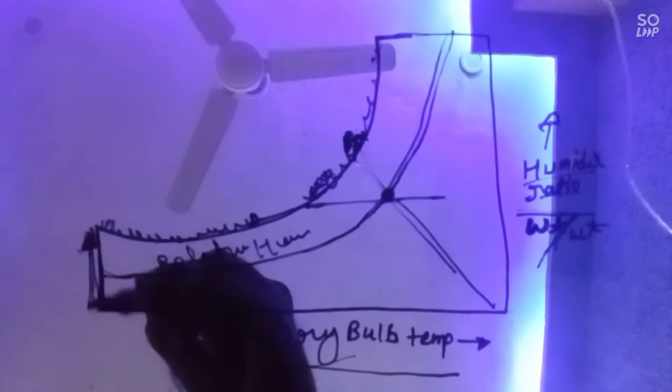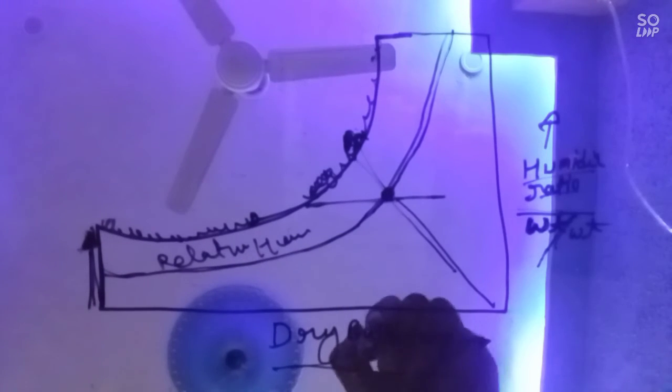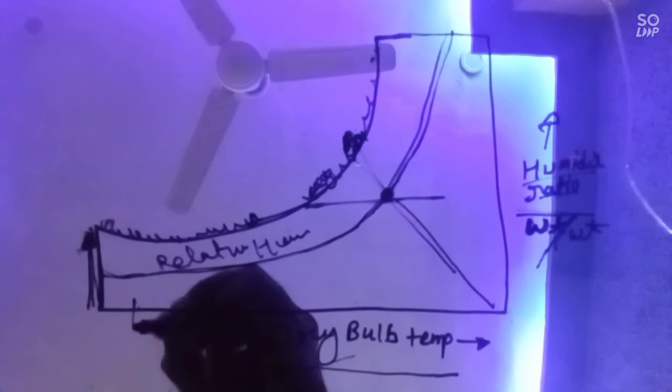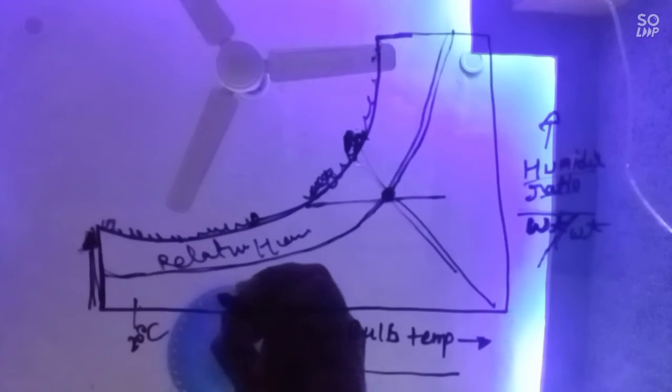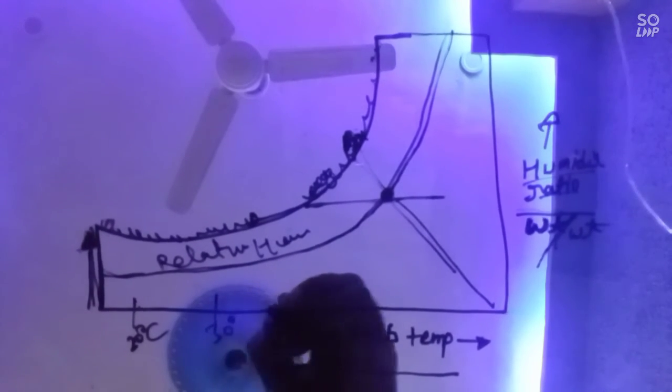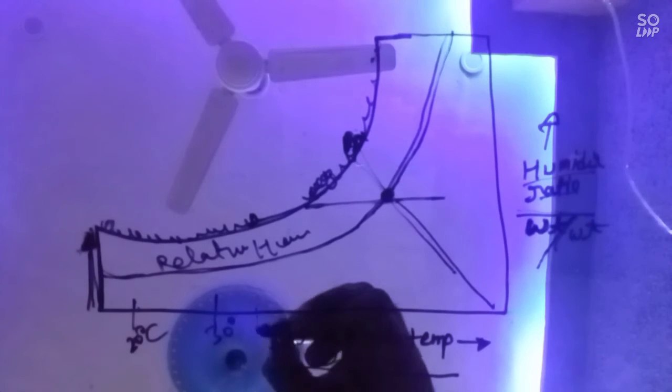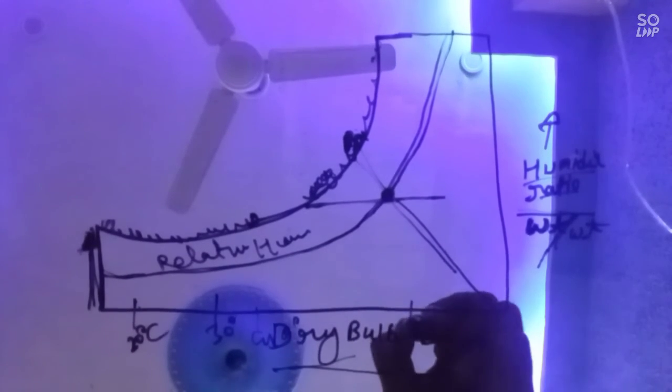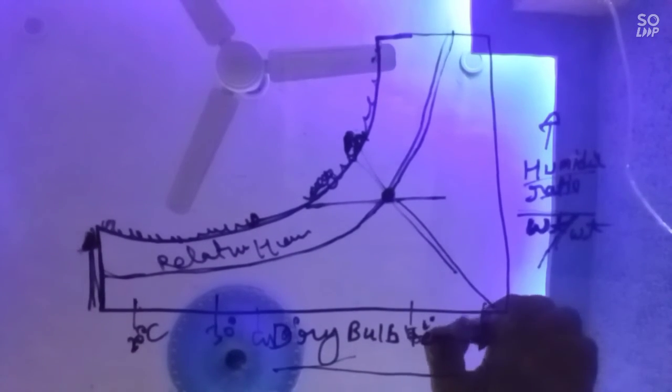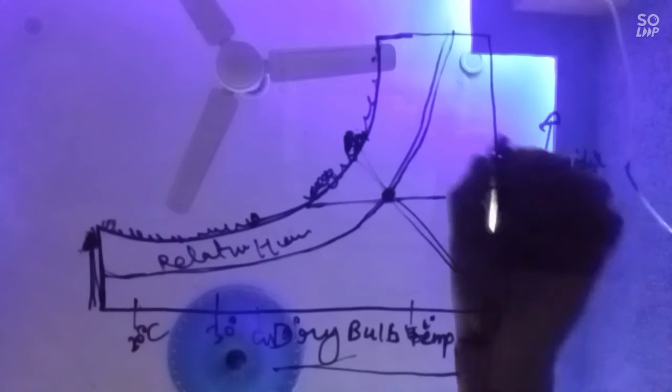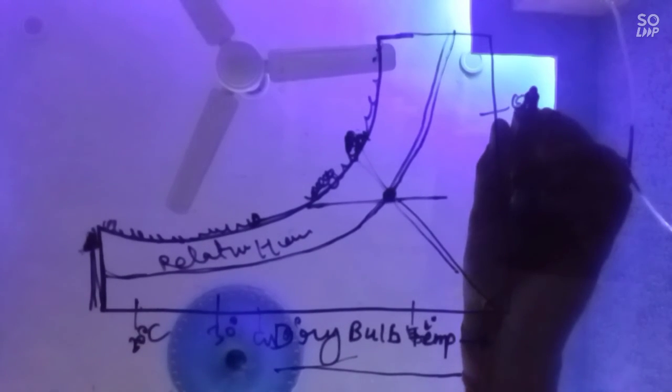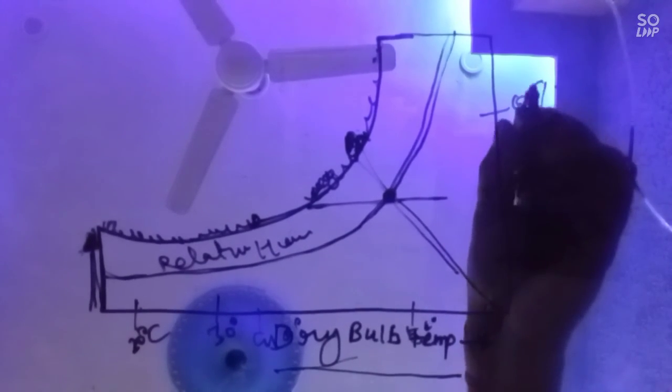It will increase and the temperature increases. Suppose here the temperature is 20 degree centigrade, 30 degree centigrade, 40 degree centigrade, 50 degree centigrade, 60 degree centigrade. And this is humidity ratio: 0.020, 0.020, 0.040, 0.190.